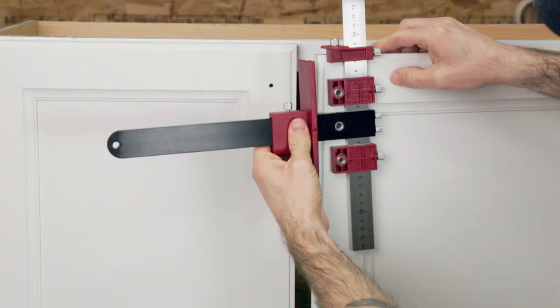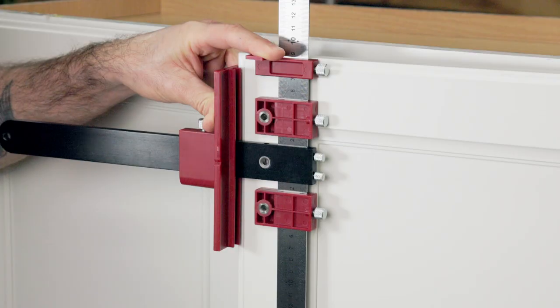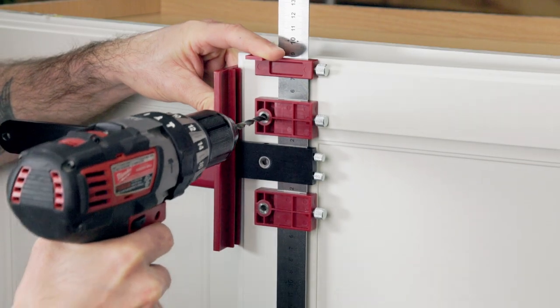Simply flip the hardware jig over to complete matching left and right cabinet doors. The hardware matches up perfectly every time.